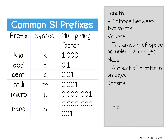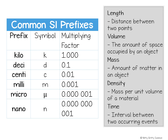Mass is the measurement of the quantity of matter in an object. Density is the mass per unit volume of a material, and you find density by dividing an object's mass by the object's volume.